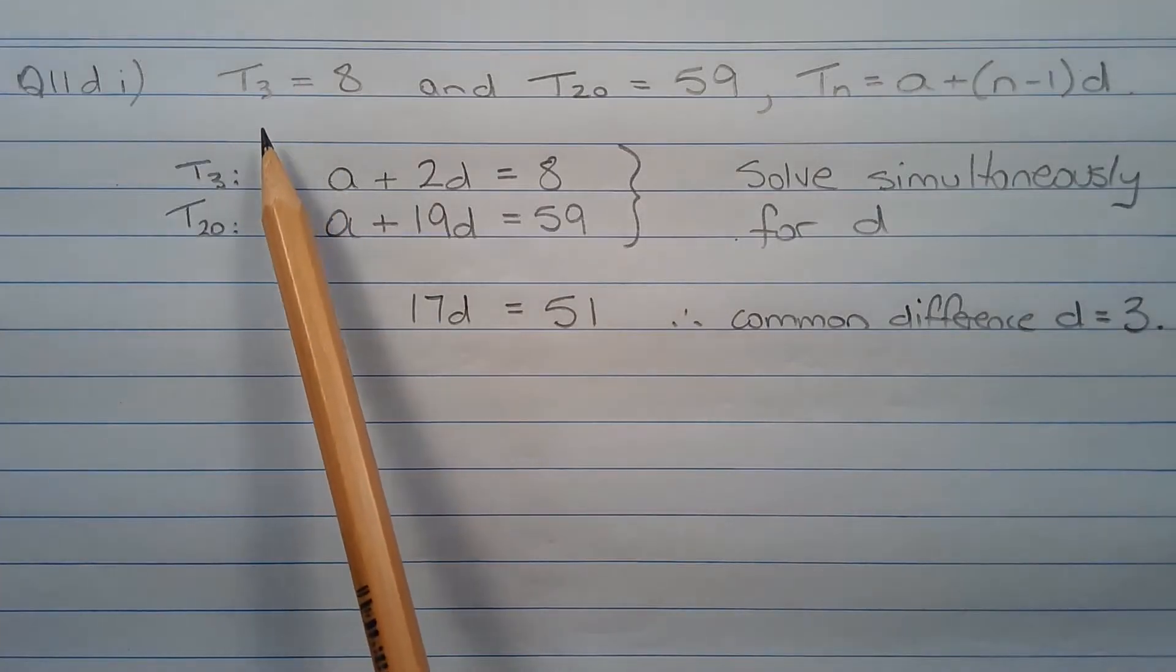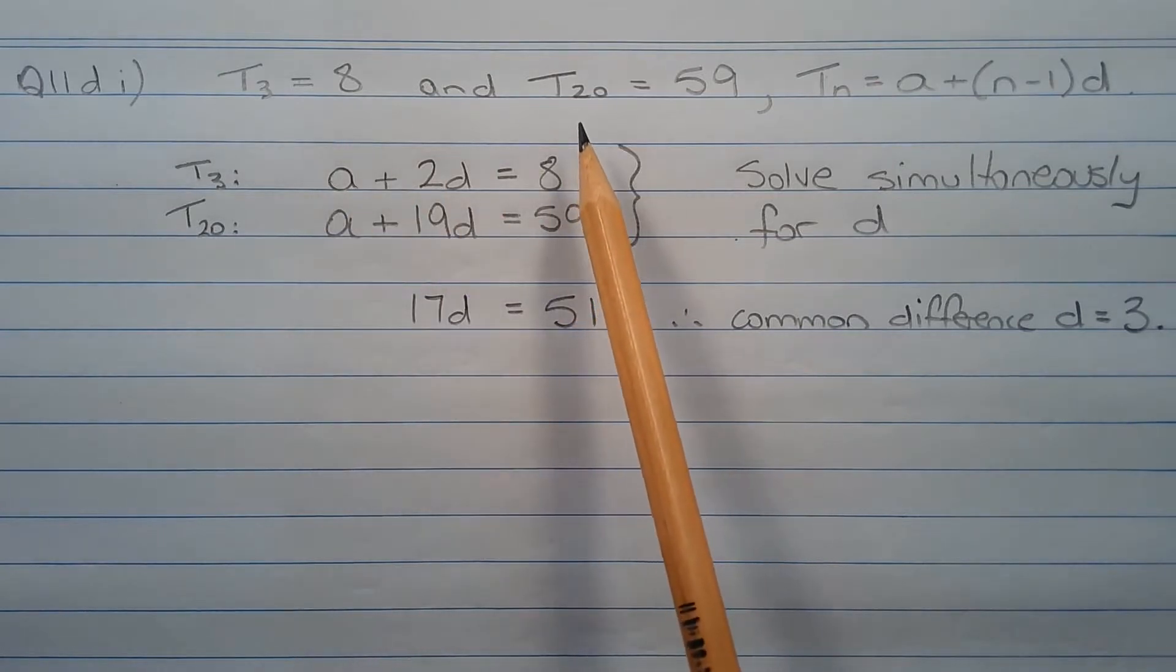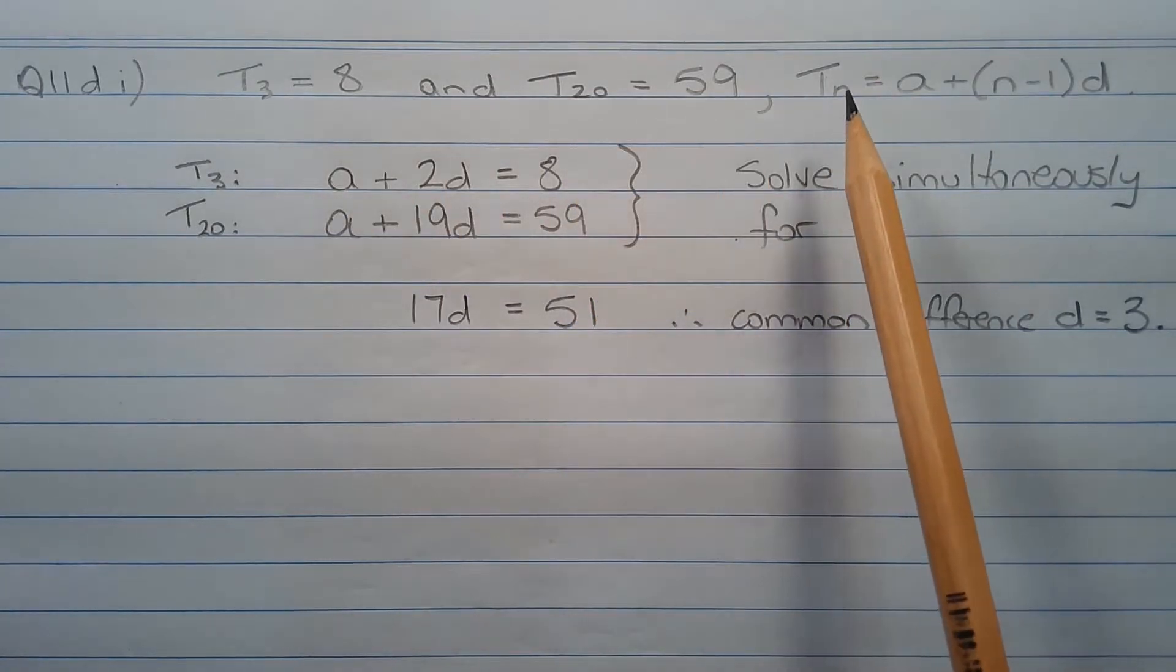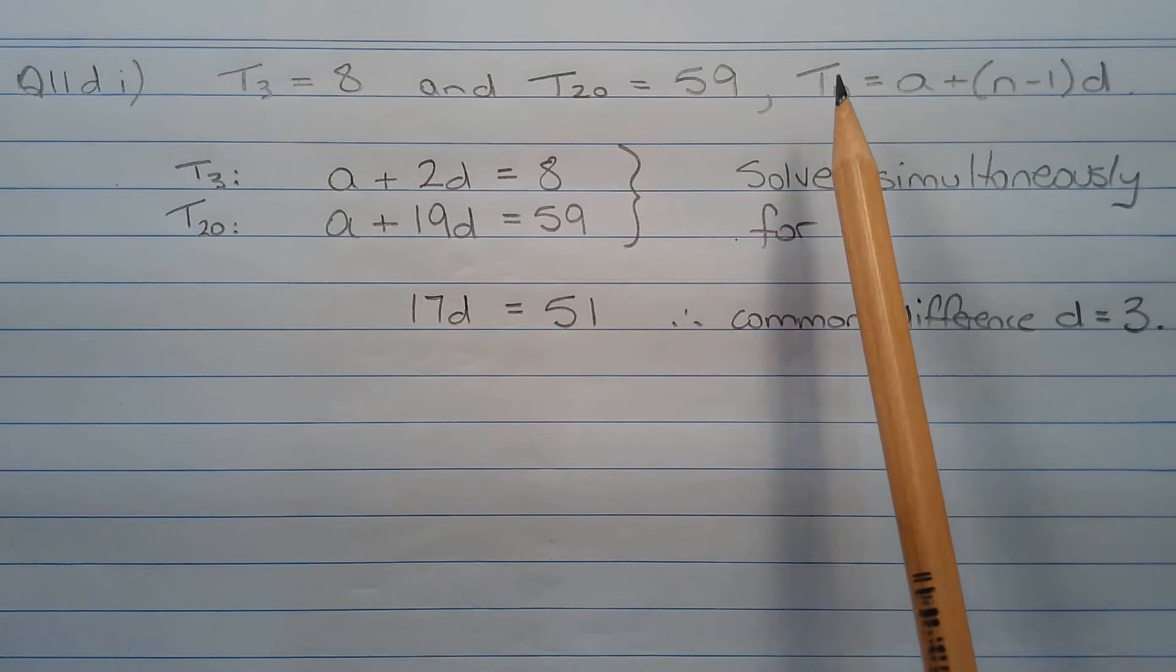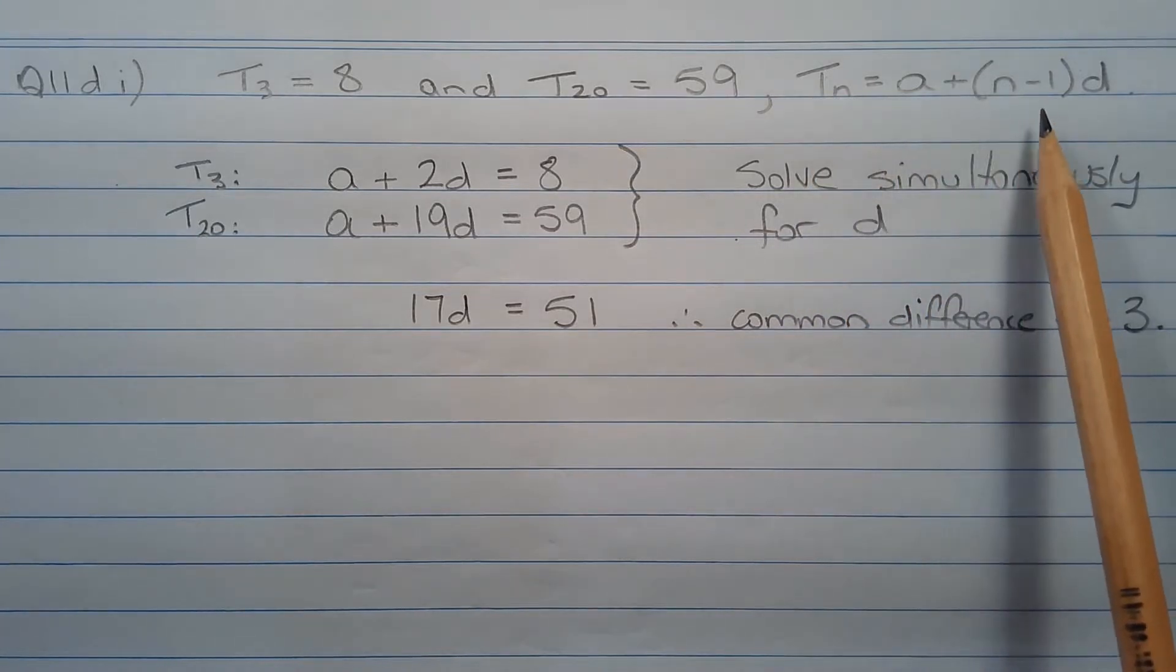The 3rd term of this arithmetic series equals 8 and the 20th term equals 59. Now the nth term of this arithmetic series, Tn, is given by the formula Tn equals a plus n minus 1 times d, where d represents the common difference.